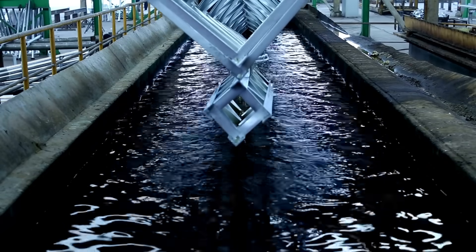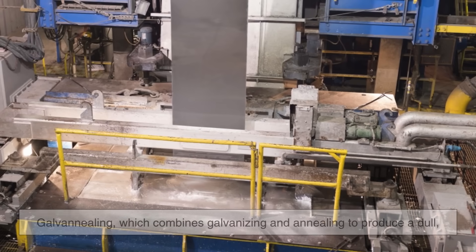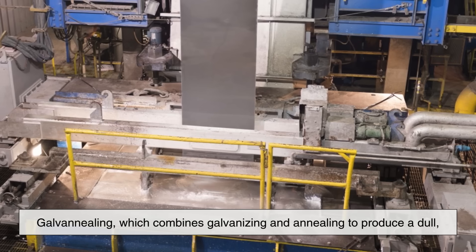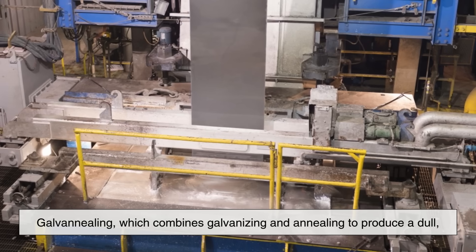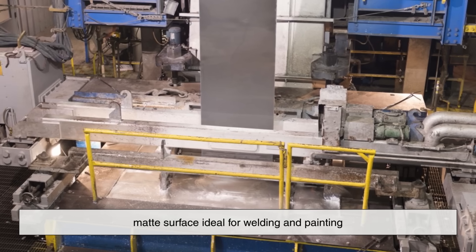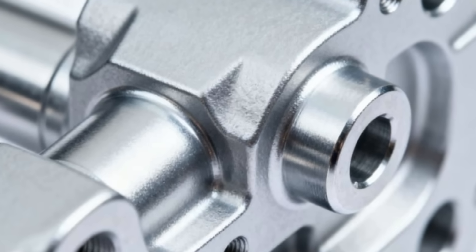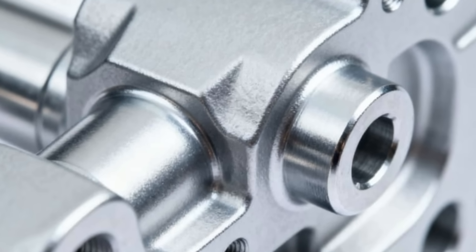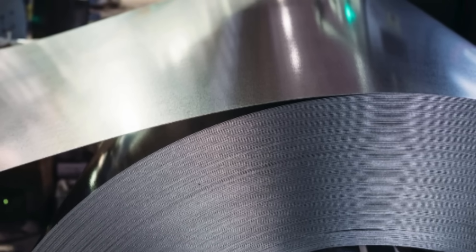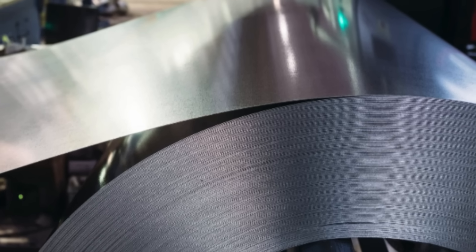Another method is galvannealing, which combines galvanizing and annealing to produce a dull, matte surface ideal for welding and painting. This is widely used in car bodies, construction panels, and high-strength components that require both durability and formability.